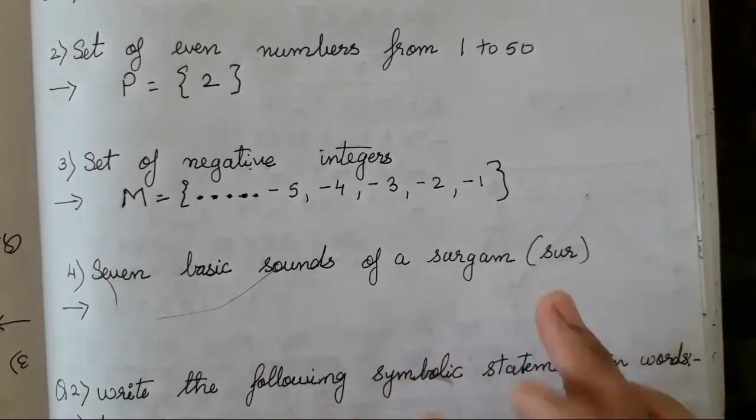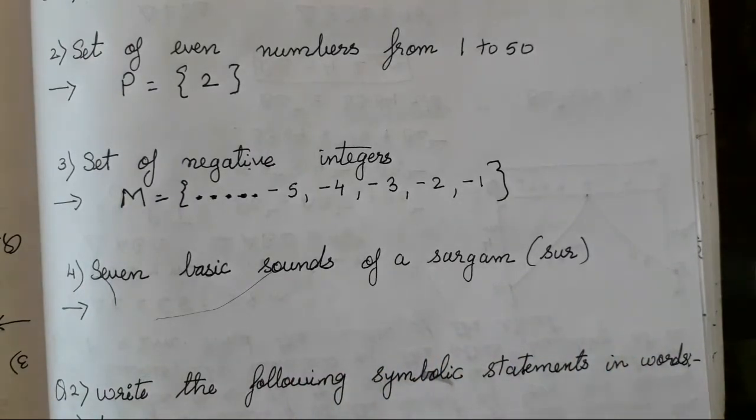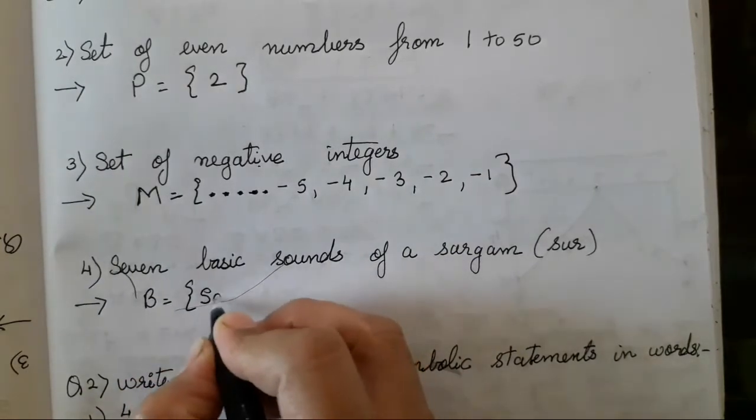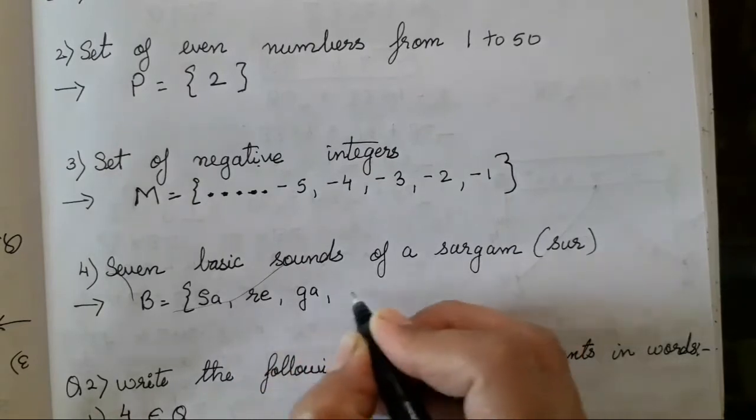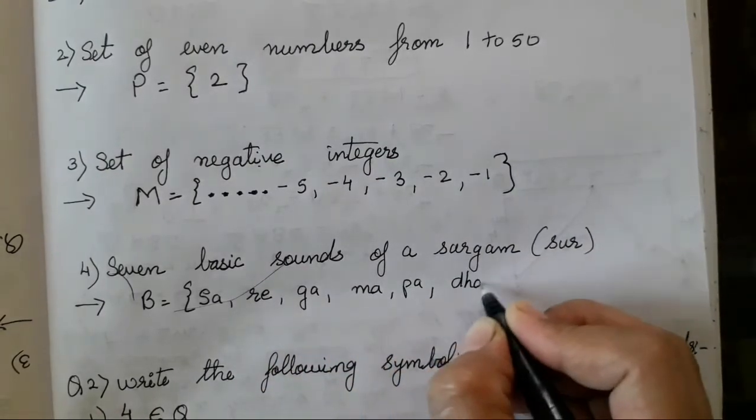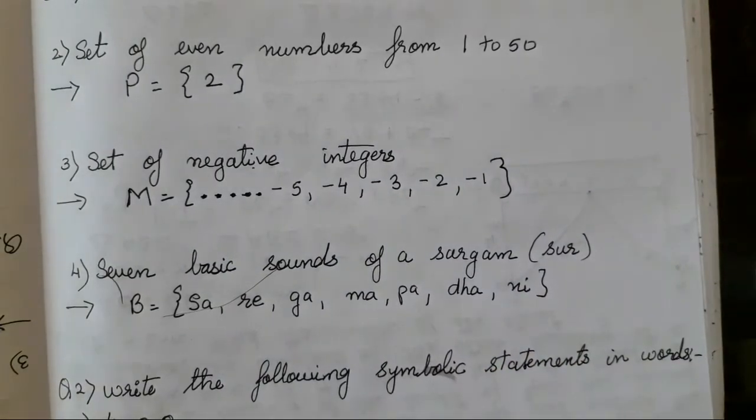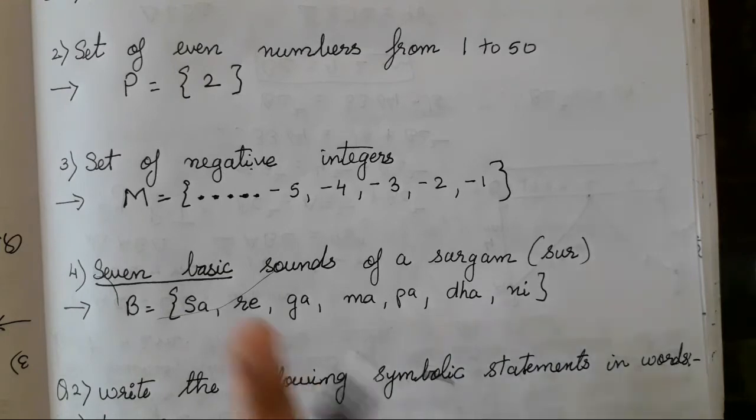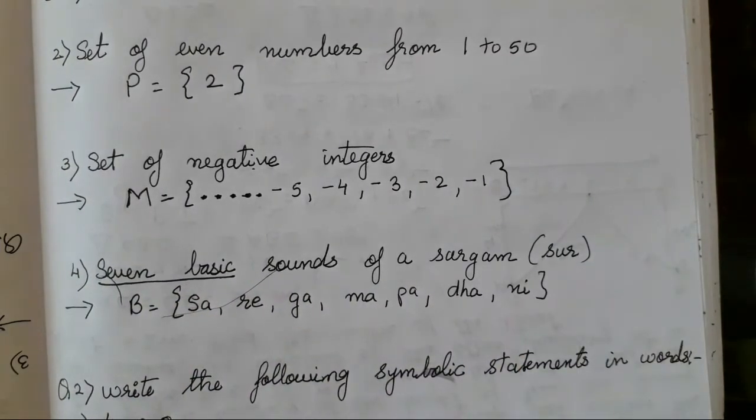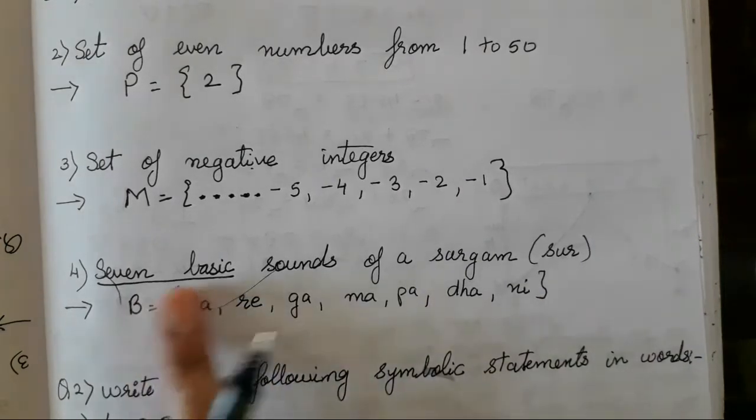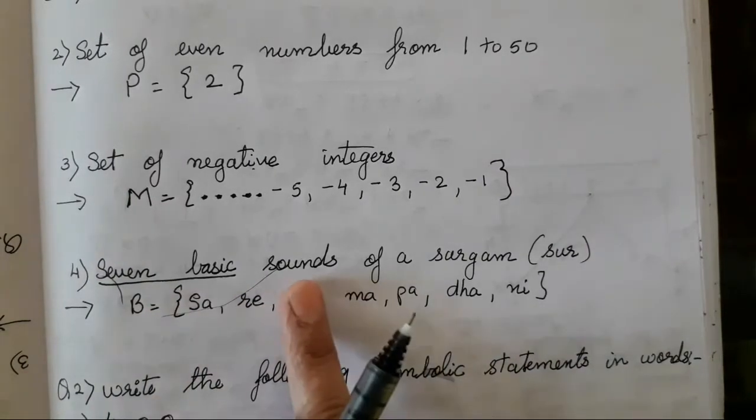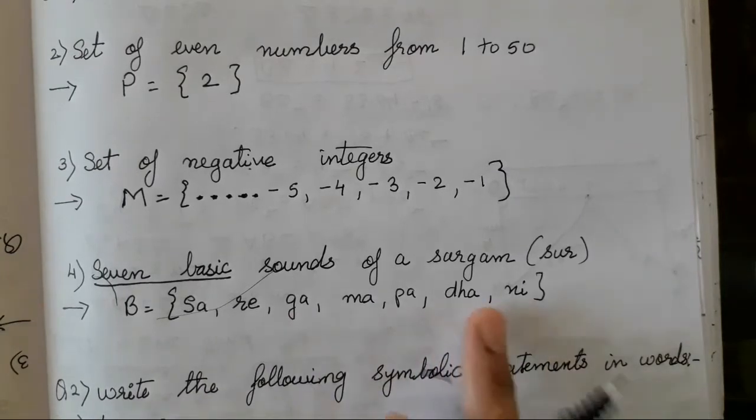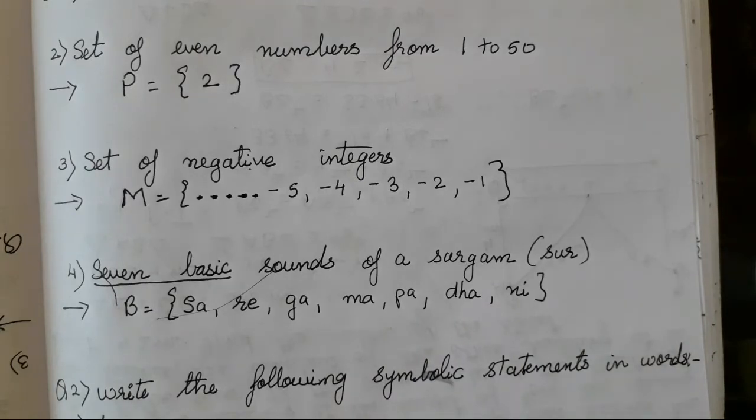Next question is 7 basic sound of a sargam that is sur. What are the 7 sargums or 7 sur? You all can take it as B or any alphabet as your wish. Sa, re, ga, ma, pa, dha and ni. Now we all know there are 7 basic. They have already mentioned 7 basic. So there has to be 7 not less nor more. So 7 basic sound. These are the 7 basic sounds. We cannot add them. We cannot delete them. So whatever is being asked we have to name them. If they say 7 days in a week, so you all have to start from Sunday, Monday, Tuesday, Wednesday till Saturday. In this way you all have to write the roaster method. Roaster method is very easy to write.